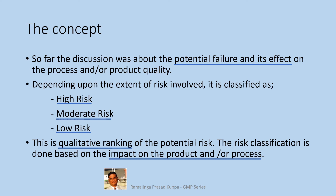The risk classification should take into consideration the severity of the risk, the probability of the risk occurrence, and detectability. Severity is the seriousness of impact on the product or process quality. Probability should be understood as how frequently that could happen. Detectability is an indicator of how fast or early the risk could be detected. These aspects can also be captured in a qualitative way as high, moderate, and low. One important point: more the severity and more the probability, more the risk. But when it comes to detectability, more the detectability, less the risk — it is the opposite of the other two.